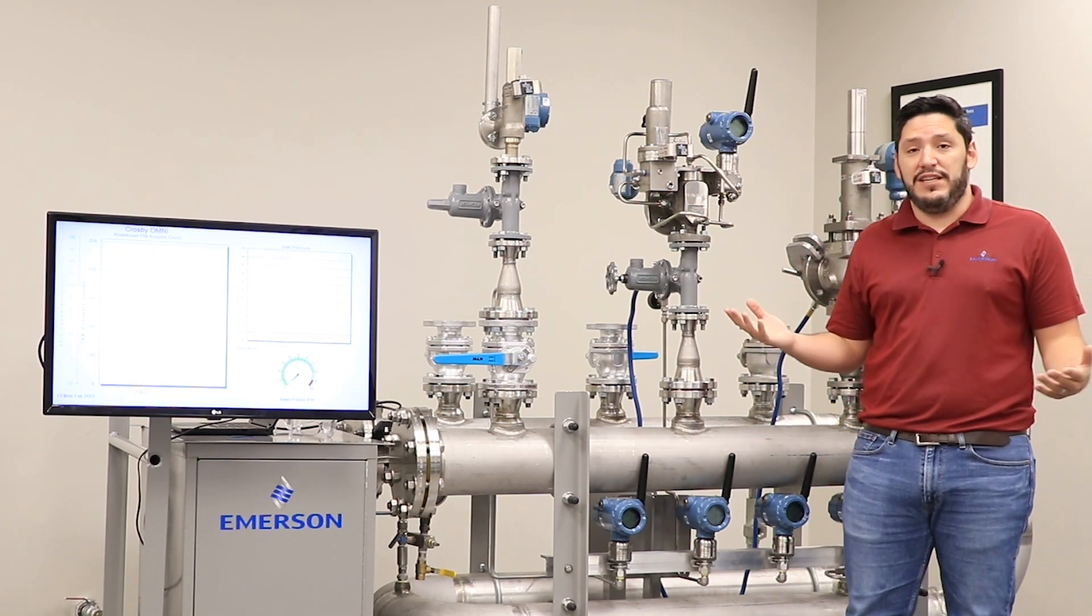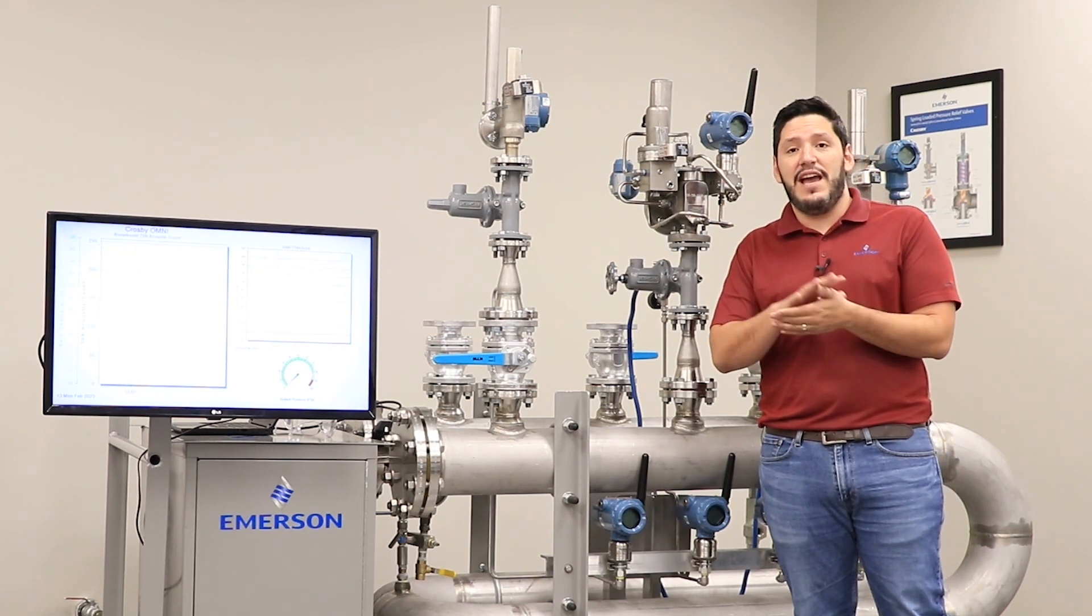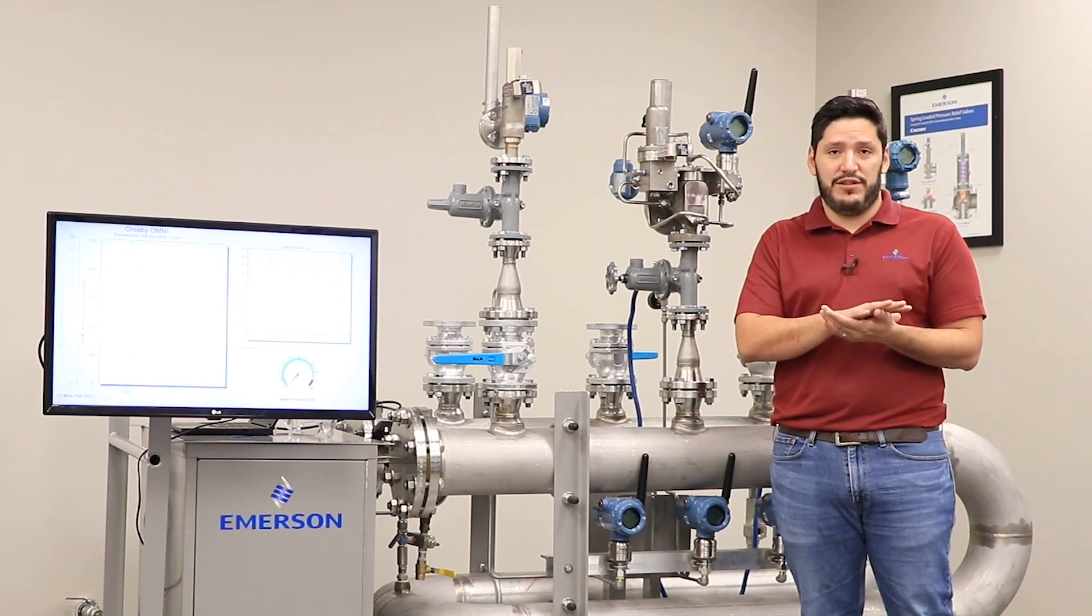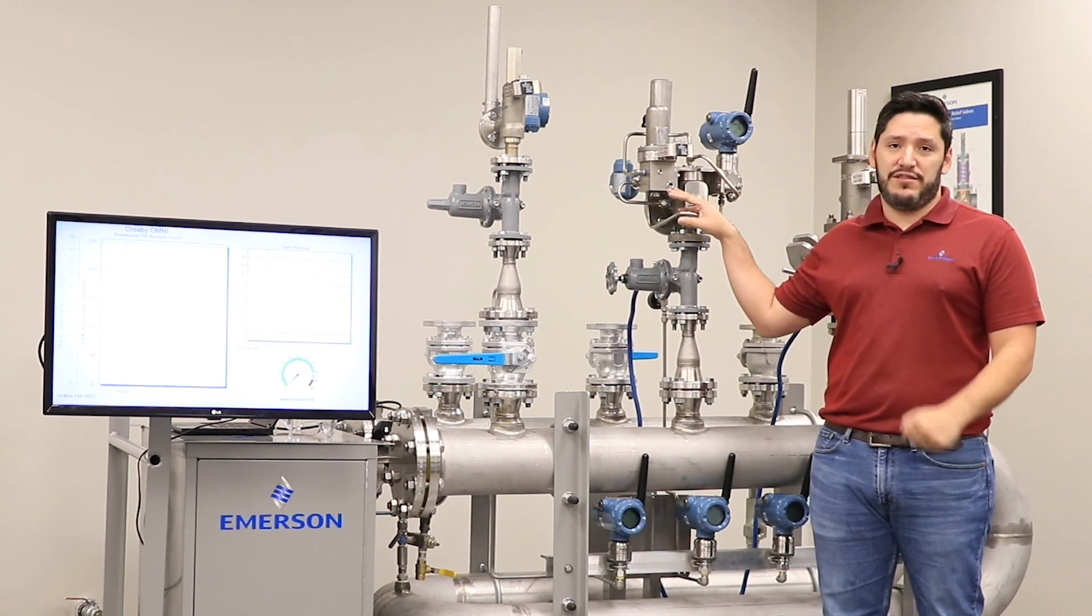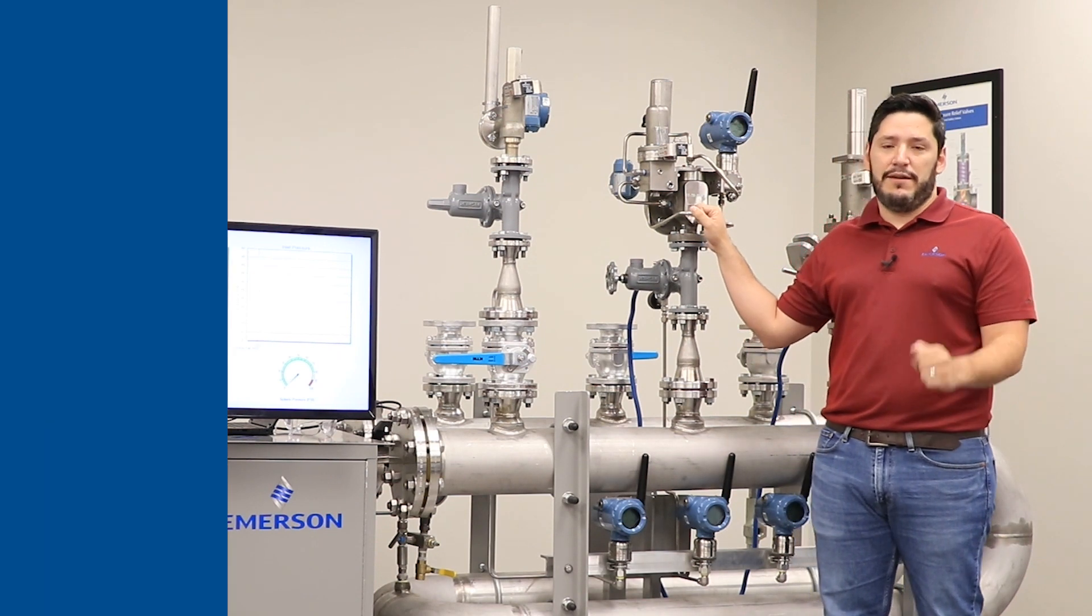And then number four is safety. PRVs are a compromise between safety and emissions, so we protect personnel by knowing when these PRVs are going off. Next, we'll talk more about each individual solution more in depth.